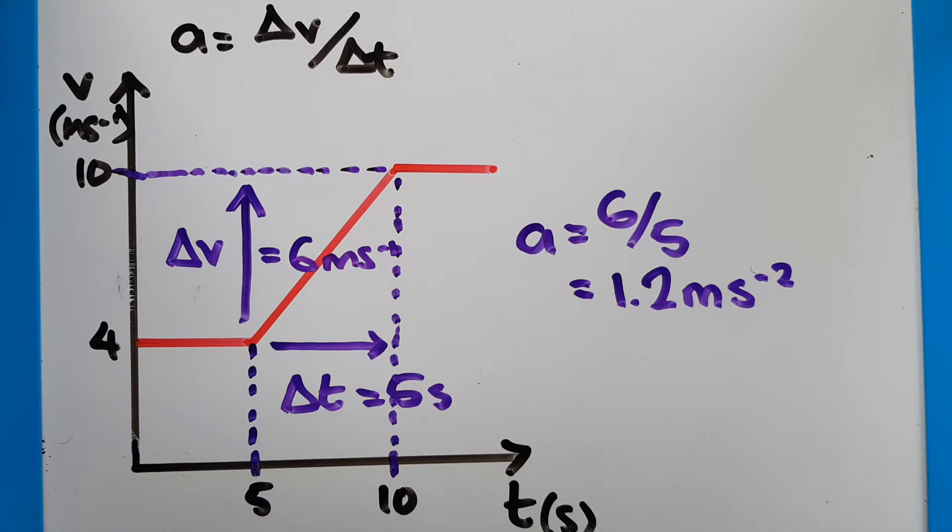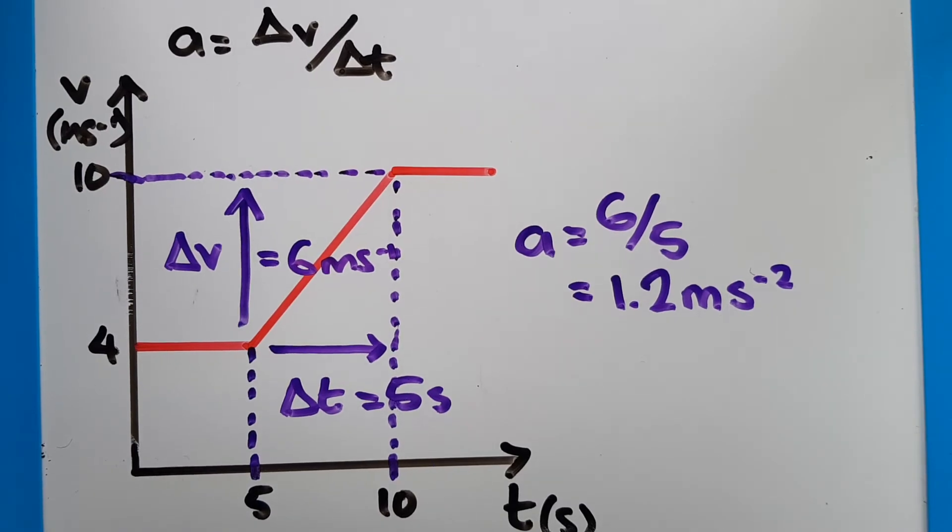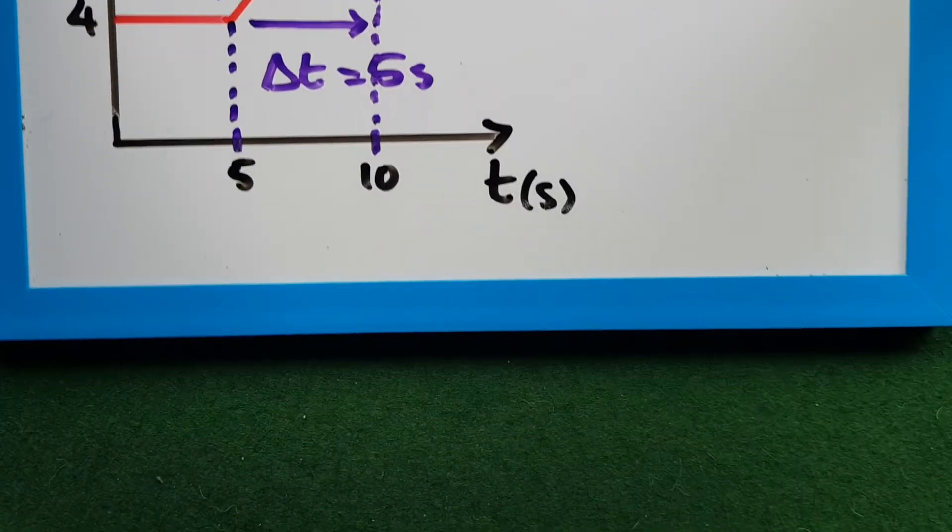So those are our most straightforward or simple calculations that we can do. There is, however, one more that's a little bit trickier. And that's finding from a graph like this how far an object has traveled. Now excuse me, I've got to get rid of my whiteboard here and put another one in, so it's going to be a bit messy for a second.